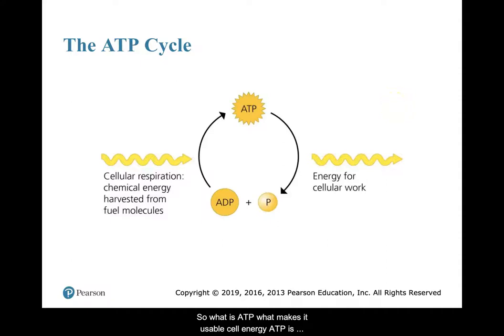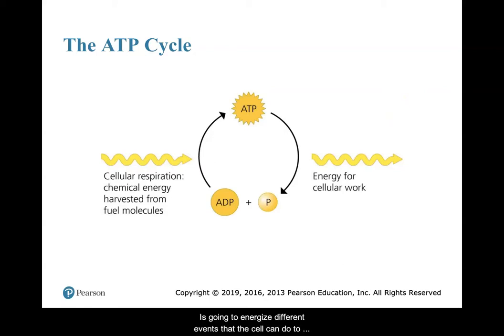So what is ATP? What makes it usable cell energy? ATP, adenosine triphosphate, is going to energize different events that the cell can do to perform work by transferring a phosphate.